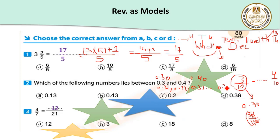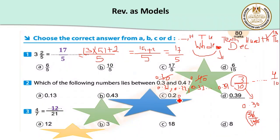Up to 0.39. We don't take thirty-hundredths and we don't take forty-hundredths because the question asks which number lies between three-tenths and four-tenths, so we don't take 0.3 or 0.4. Thirteen-hundredths: is it between thirty and forty hundredths? No. Forty-three hundredths is greater than forty-hundredths, so it's not correct. 0.2 means 0.20 — twenty-hundredths is less than thirty-hundredths, so that choice is not correct. The last one, thirty-nine hundredths, is the correct answer.